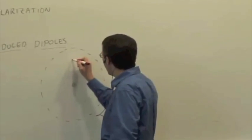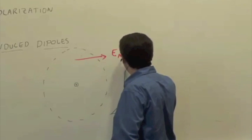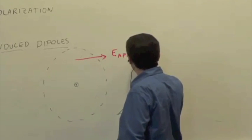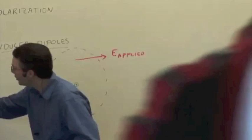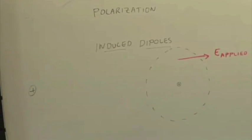So if we have an electric field applied here, I'll just call it the applied, which could be due to, for example, some positive charge over here, or some negative charge over here, or what have you, then it causes a shift in the electron cloud.